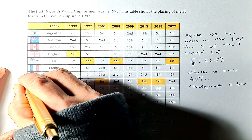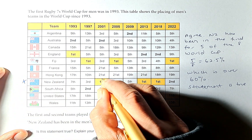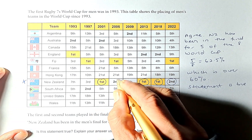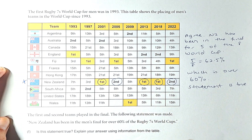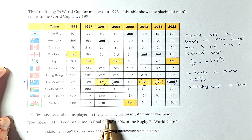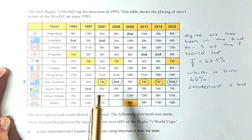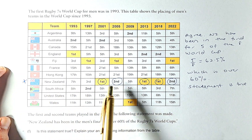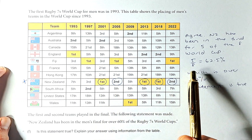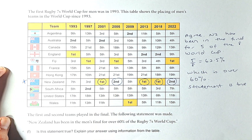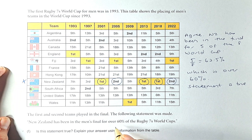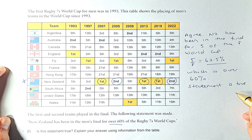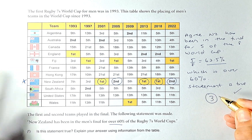Looking at New Zealand in the table: New Zealand finished first three times and second twice. When they finish first or second, they are in the final. So New Zealand appeared in the final 5 times out of 8 tournaments. That is 5 out of 8, which equals 62.5%. Is that more than 60%? Yes, it is — 62.5% is greater than 60%, so the statement is true. That satisfies outcome number 3.